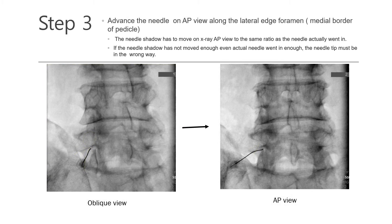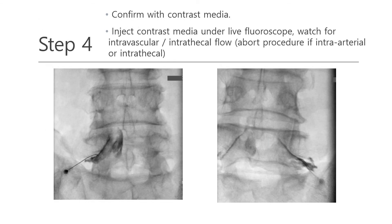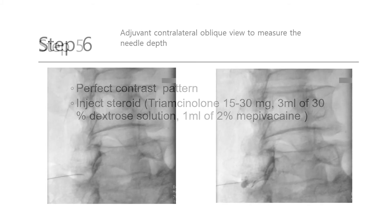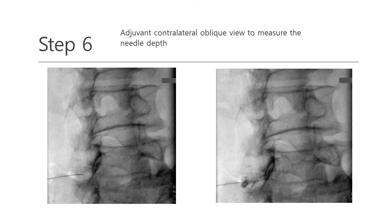Step 3: on AP view, advance the needle along the medial inferior border of the pedicle. The needle shadow has to move on the X-ray AP view at the same ratio as the needle went in. If the needle shadow has not advanced enough, the needle tip must be going the wrong way. Step 4: infiltrate the contrast media under live fluoroscopy. If I see a good contrast pattern, I inject a steroid mixture. I use triamcinolone, 50% dextrose, and 2% mepivacaine. Sometimes it is challenging to observe a safe triangle, so I commonly use a contralateral oblique image.